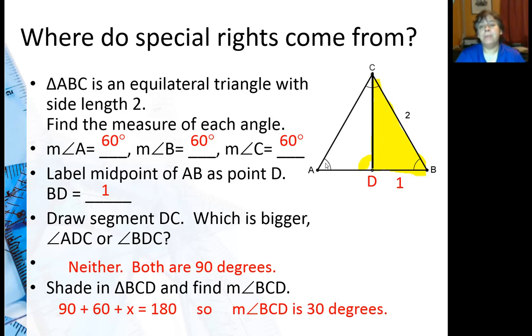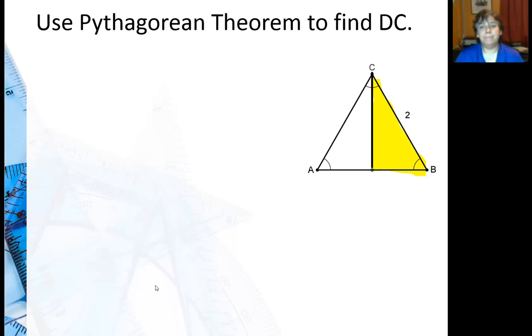How did I know that? Well I know this is 90 on the bottom here. We have 60 so this small angle up here is 30 degrees. And I got the 30 just by saying 90 plus 60 plus x is 180 and solving. So let's go ahead and find that missing leg.